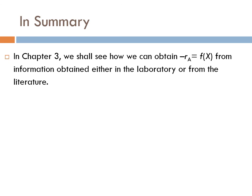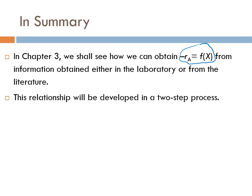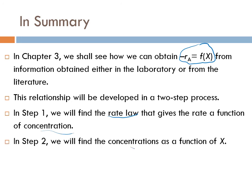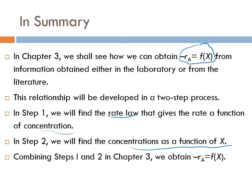In Chapter 3, we shall see how we can obtain minus r_A as an equation, a function of X, from information obtained either in the laboratory or from the literature. This relationship will be developed in two steps. In Step 1, we will find the rate law that gives the rate as a function of concentration. In Step 2, we will find the concentration as a function of conversion.